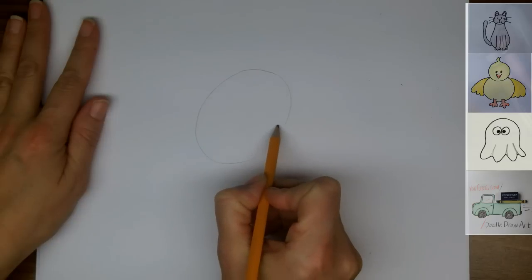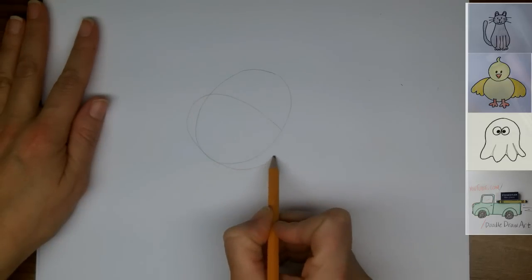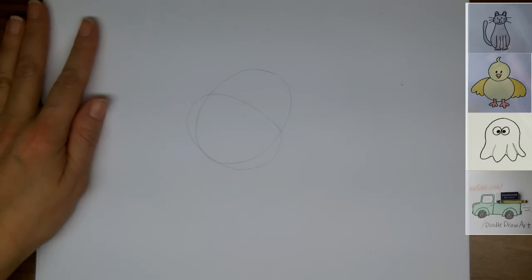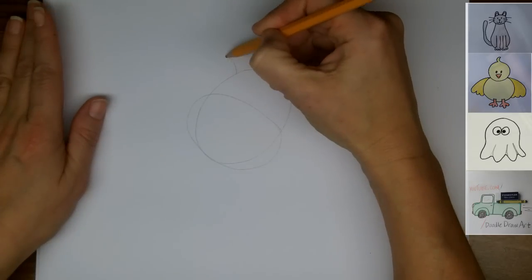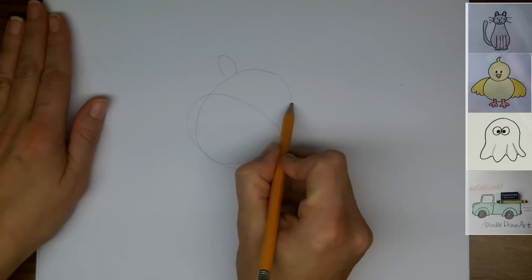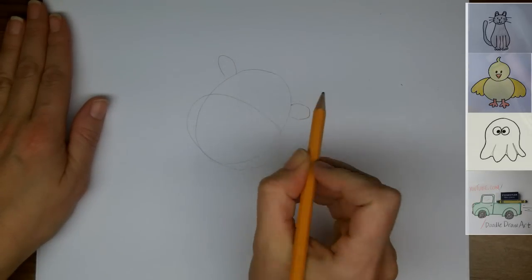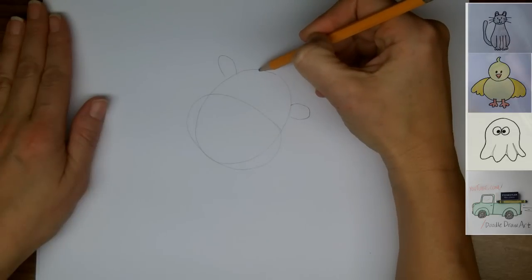And then we'll draw another oval for his snout, and then his ears, just sticking out to the side, little ovals touching the top of his head.